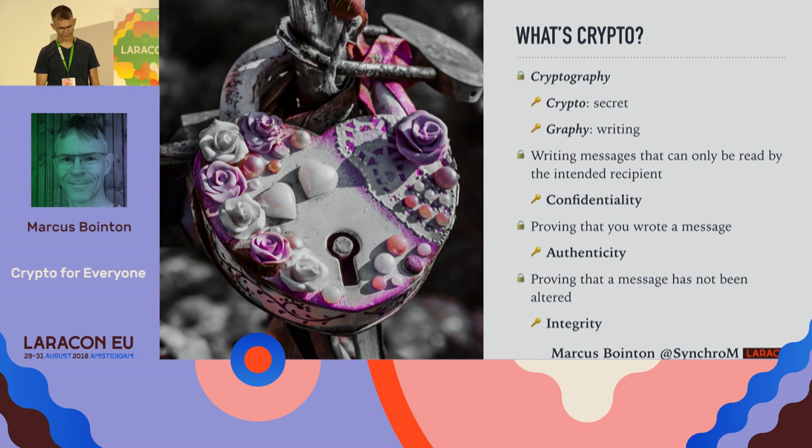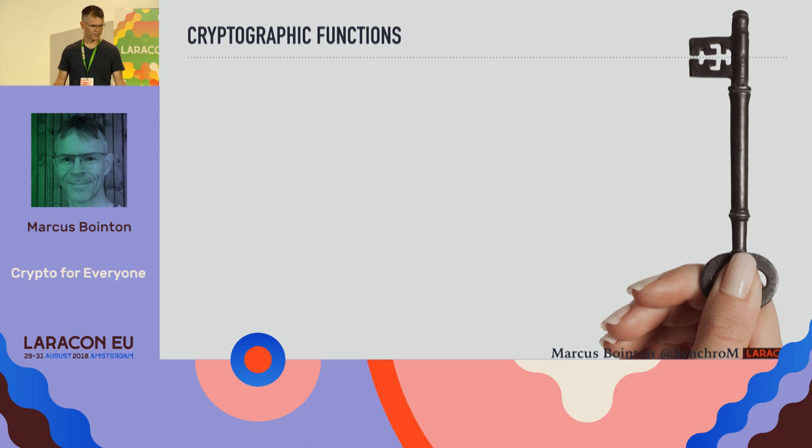Curiously, all of these things are actually pretty orthogonal. You can have more or less each of them independently in more or less any combination. So what are cryptographic functions, and what can we use them for? We can divide them up into rough groups according to the number of keys involved.